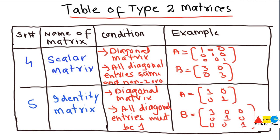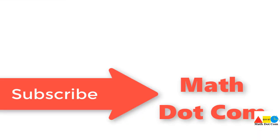That was all about the different types of matrices — their definitions, examples, and how you can memorize them easily by dividing them into two categories, Type 1 and Type 2.